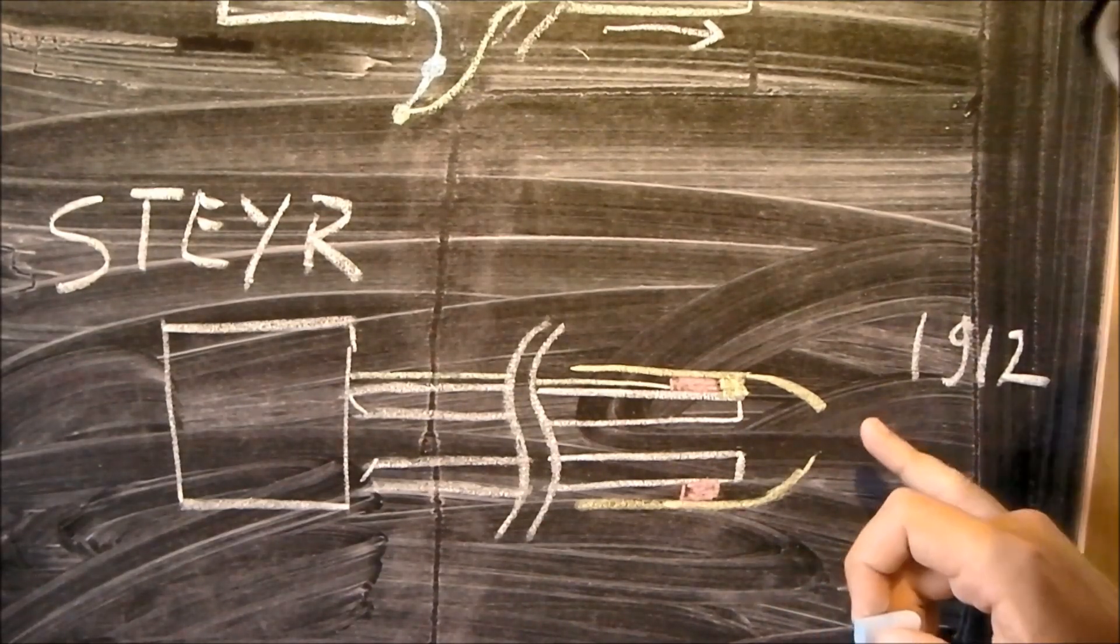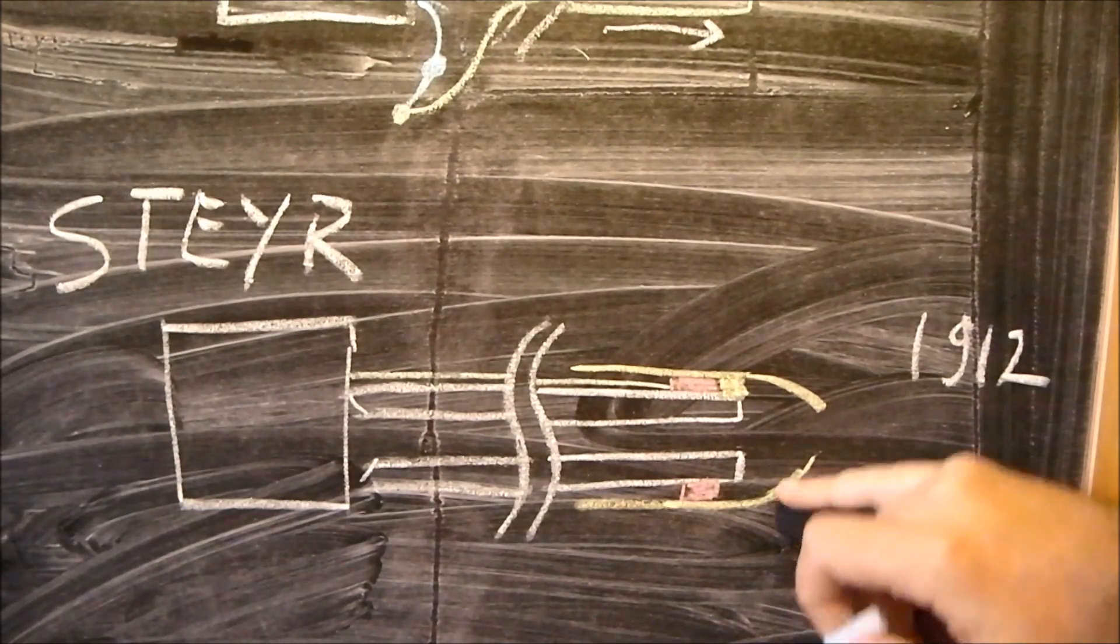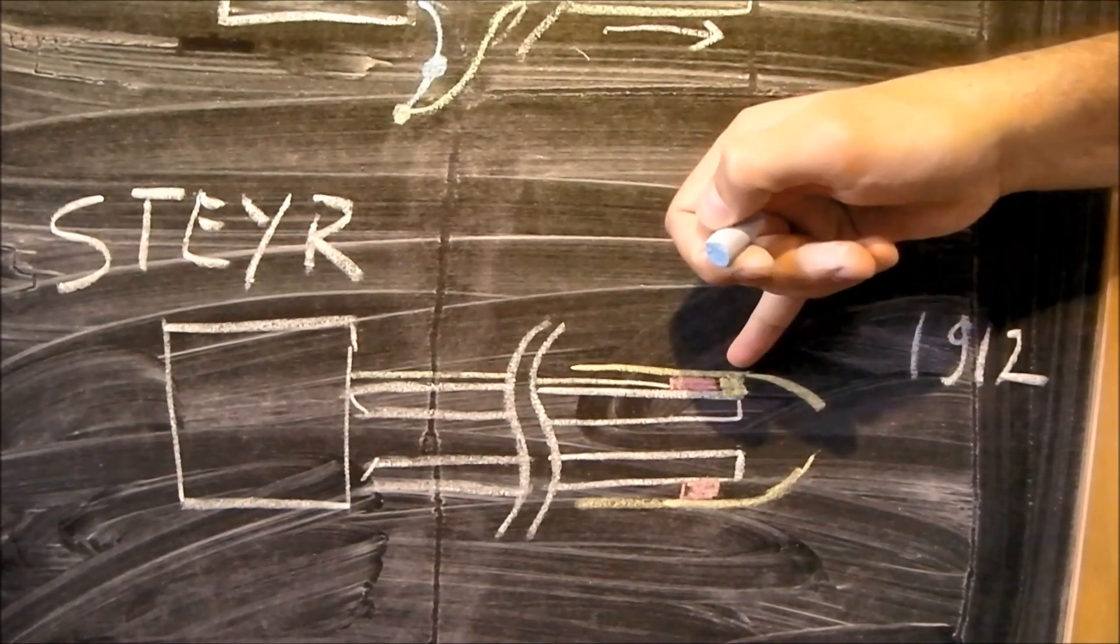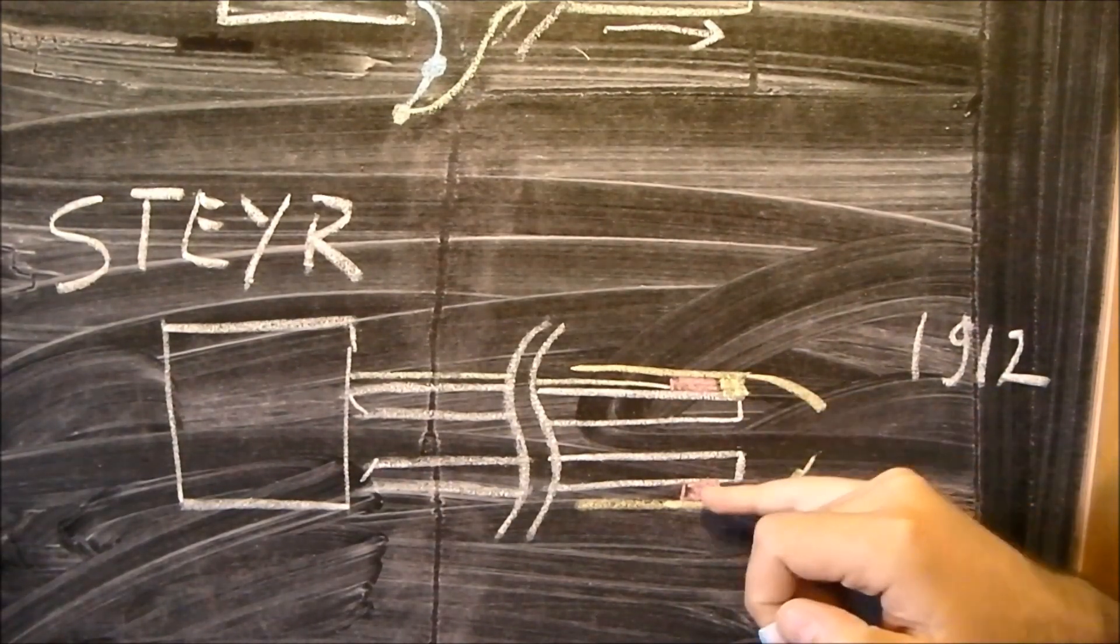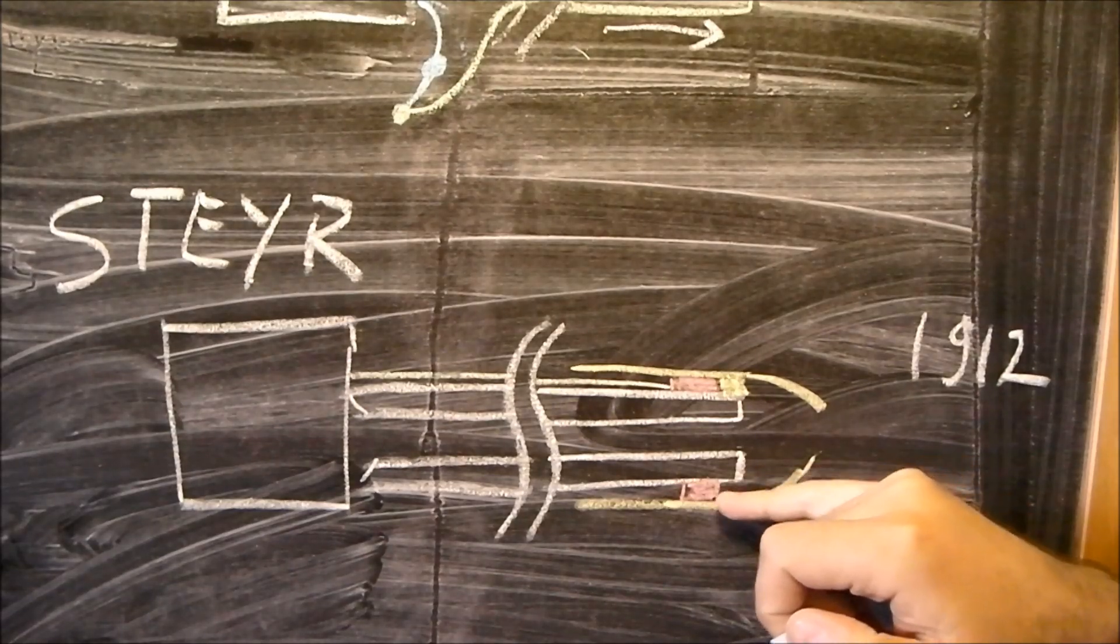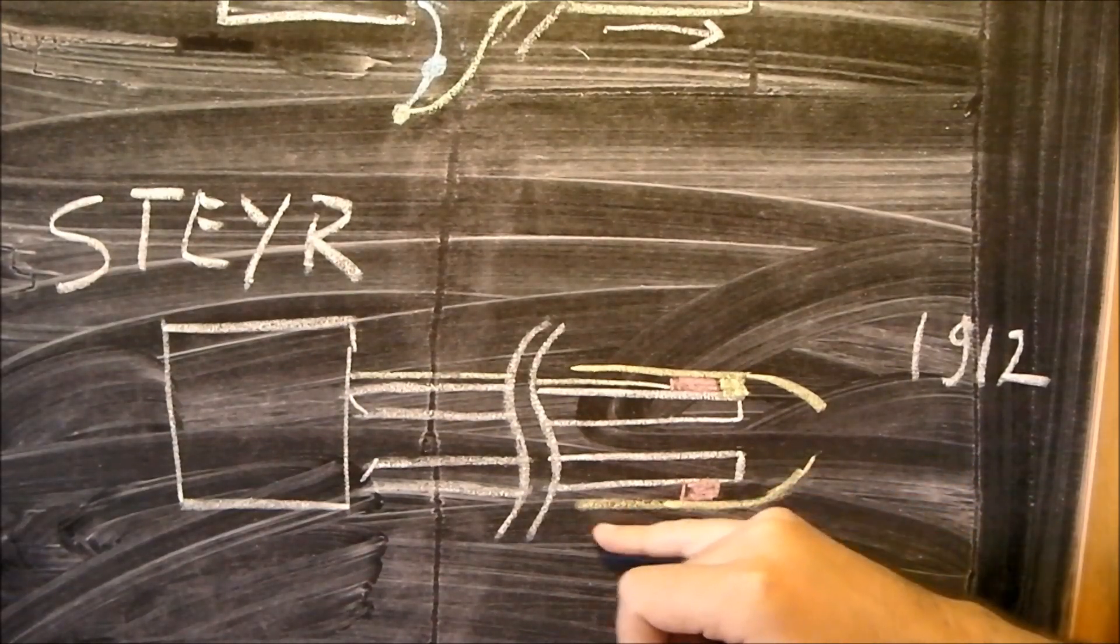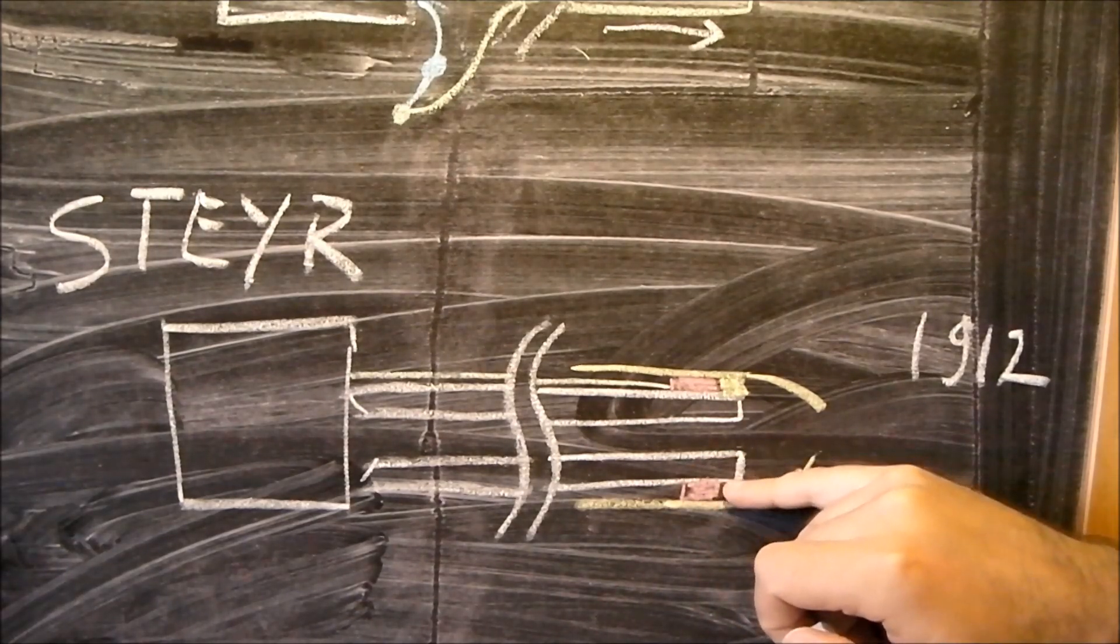Now what we have here is we have a muzzle sleeve that is threaded onto the muzzle. Now through this thread there's several gas ports, two or four gas ports, which lead to essentially a cavity formed between the fixed sleeve and the barrel in which there's a very pretty pink annular piston.